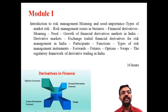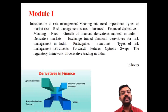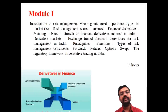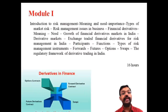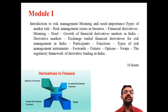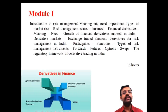We also cover participants in the financial derivative market — that means hedgers, speculators, and arbitrageurs — different categories of persons involved in transactions in the financial market. And the functions of the derivative market. Types of risk include systematic and unsystematic risk, such as market risk, interest rate risk, inflation risk, credit risk, and default risk.